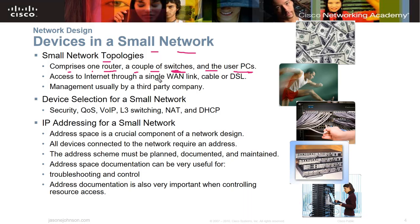You can have multiple routers, but usually one or two in a small network. You might see a switch if you're running to two different rooms or areas of a building, to segment local area networks without needing a router. Access to the internet is usually through a single WAN link — cable or DSL. Management is usually by a third party. Small businesses often hire contractors, which is probably what you may be training to do.